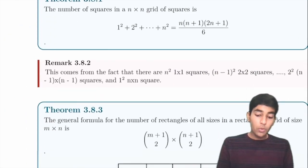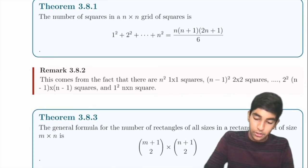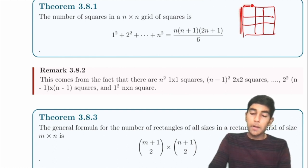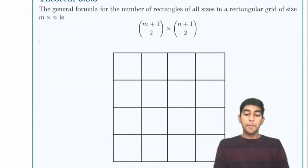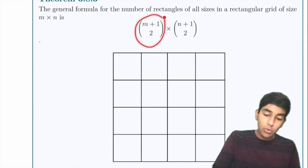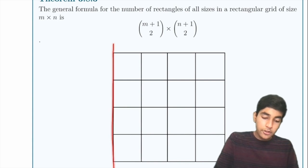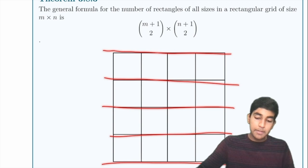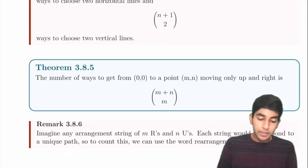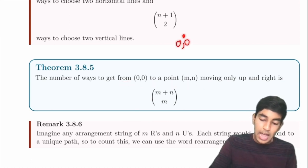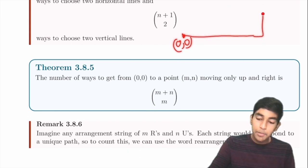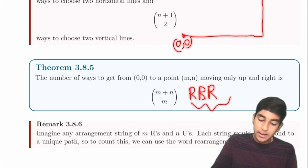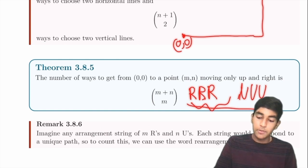Geometric counting: the number of squares in an n×n grid is 1² + 2² + 3² + ... + n². The number of rectangles of all sizes in an n×n grid is C(n+1, 2) × C(n+1, 2). For path-finding from (0,0) to (m,n) moving only right or up, the number of paths is C(m+n, n), since you must move right m times and up n times.